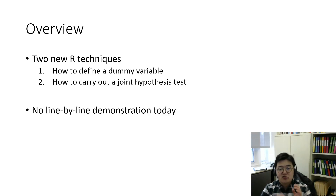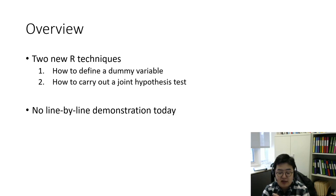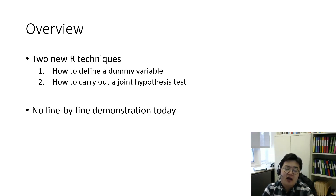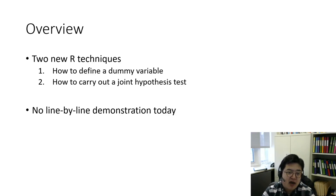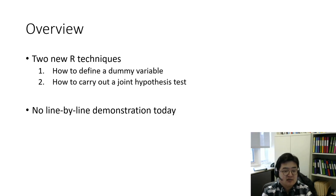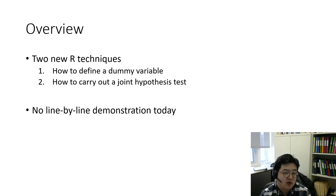Basically, what you are going to do in this homework is similar regression models. You are going to run a few regression models, but there are two additional new components. One is to define a dummy variable, and the other is to carry out a hypothesis test, particularly a joint hypothesis test. I will explain how you can implement these things in R.